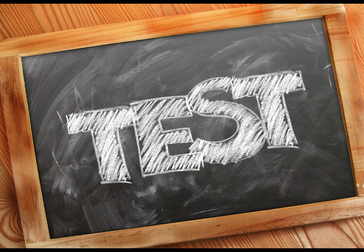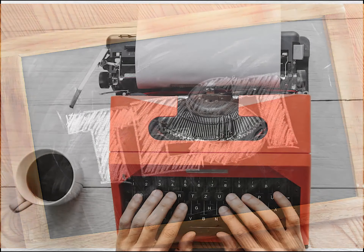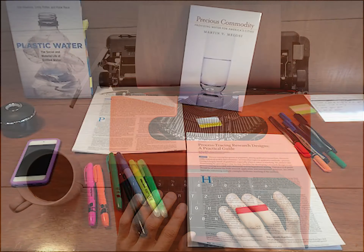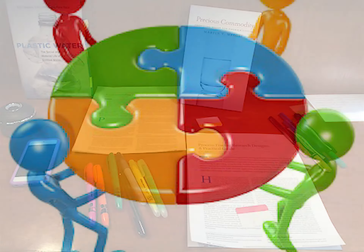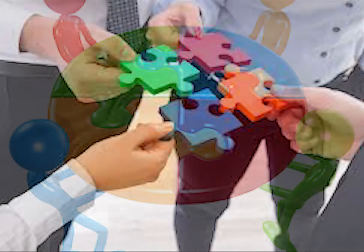Number one, positive degree. Ahmed is a tall boy. He is an intelligent student. Shahid is a wise man. Jib kishi noun ki koi khubi ya khami bian ki jaye to adjective ki positive degree istamal kerti hain. In faqrat mein tall, intelligent aur wise adjective ki positive degrees hain.